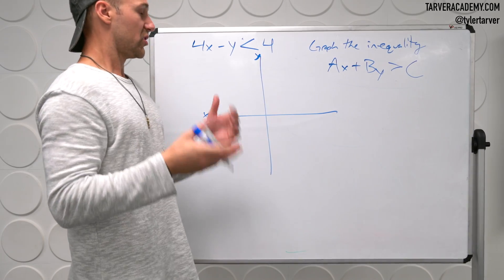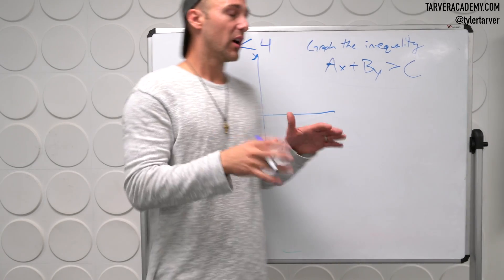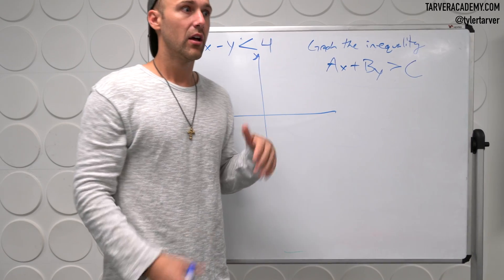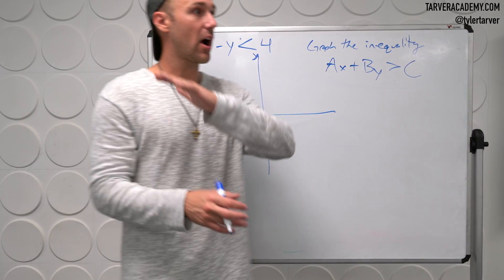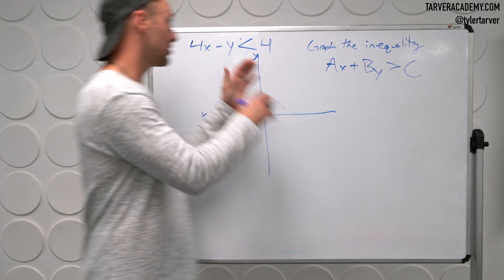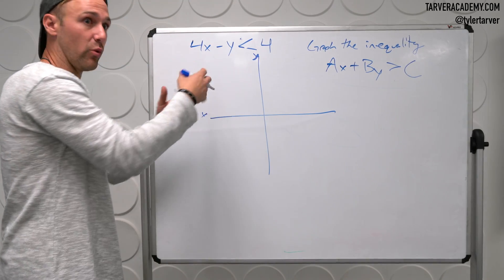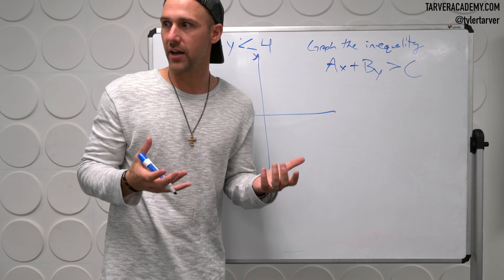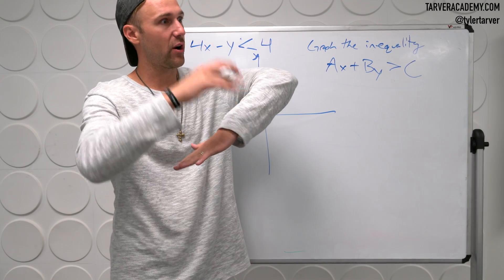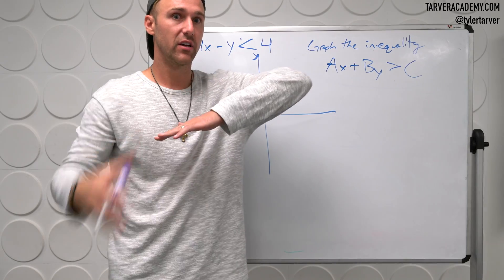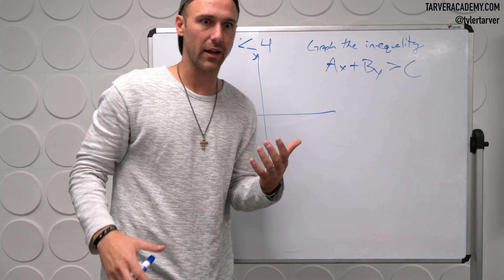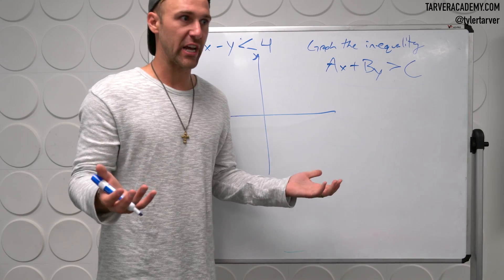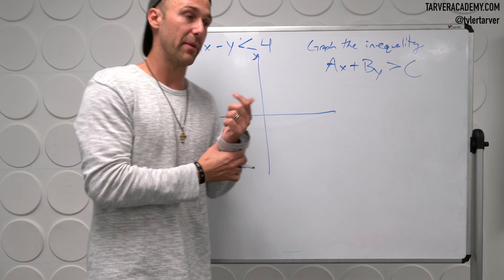Okay. So what we want to do first is, essentially, we want to ignore the inequality. Because what we're going to do first is we're going to make our line, which is essentially as if it was an equal sign. You want to just graph this line. We call it the boundary line. So it's the barrier for which this equation kind of bases itself on. I'm saying a lot of words that feel more complicated. You've got to plot that line, and then after that, we'll figure out where to shade. That's the easiest way to describe it.